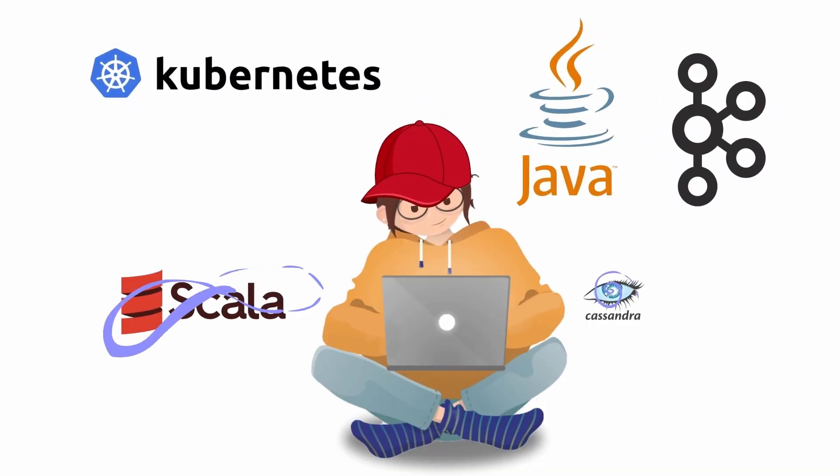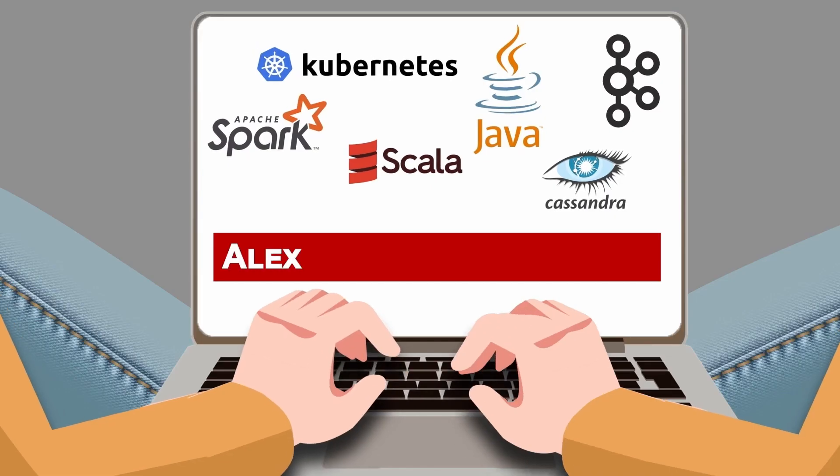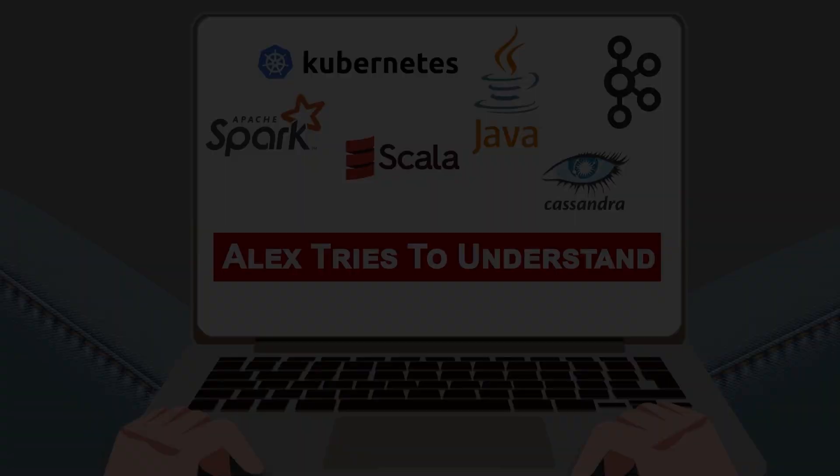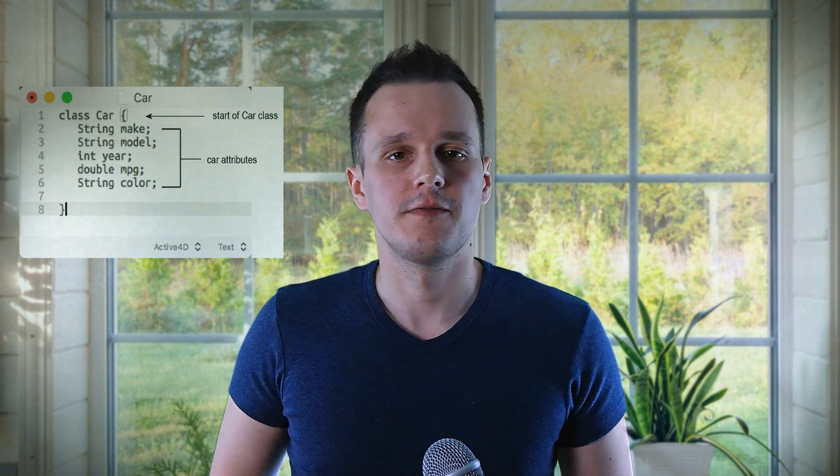There are at least two types of compilation in Java: static and dynamic. Let's see how they differ. Assume you're creating an application with only one class. When the work is finished, you should definitely run this code — so what goes on under the hood?